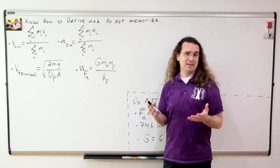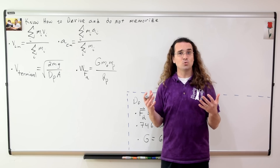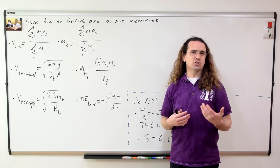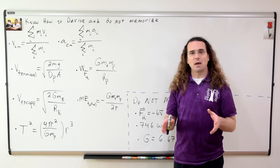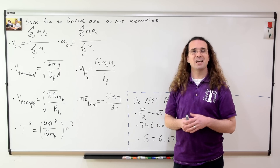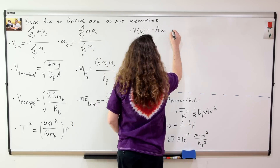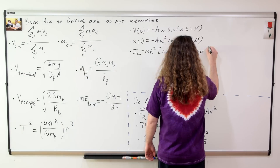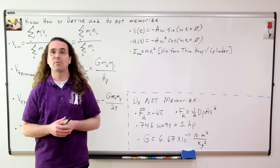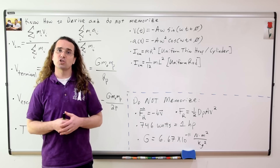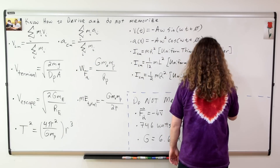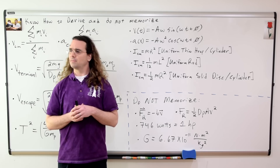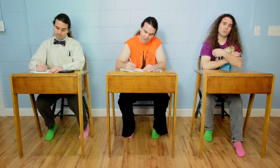The binding energy of any two objects to one another. The escape velocity of an object from a planet. The total mechanical energy of an object in orbit around a planet. Kepler's third law, or the relationship between the orbital period of an object and the radius of its circular orbit. The velocity and acceleration as a function of time of an object in simple harmonic motion. The moment of inertia of a uniform thin hoop or cylinder around its long cylindrical axis. The moment of inertia of a uniform thin rod about its center of mass. The moment of inertia of a uniform solid disk or cylinder about its long cylindrical axis — we did not do that one in the review. That's okay, we did it in class.